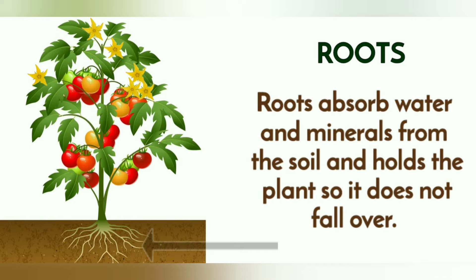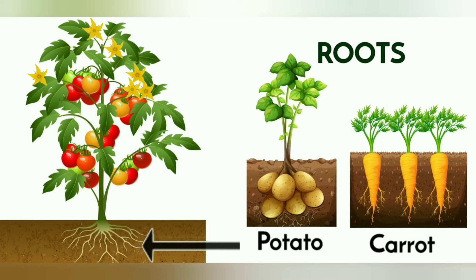Roots absorb water and minerals from the soil and hold the plant so it does not fall over. Some examples of roots we eat are potatoes and carrots.